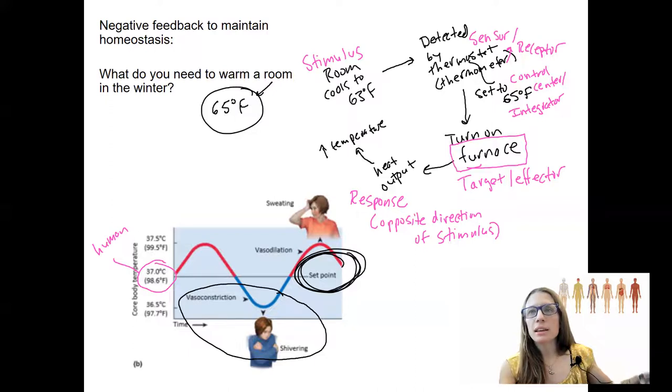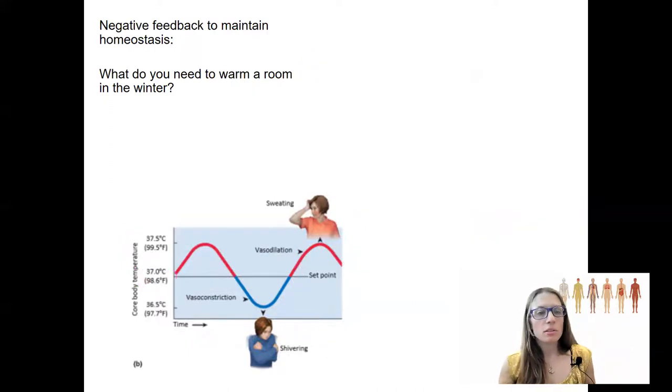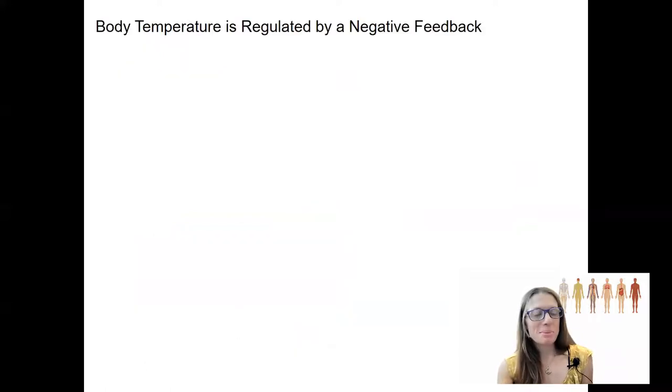So let's draw this out for body temperature. Body temperature is regulated by negative feedback. So we will talk more about what specific receptors there are. And we'll see examples. Again, we're going to apply this all throughout the year. But I want to name some. So there's thermoreceptors all over your skin that detect external temperature. There's also temperature receptors inside your body. So it's basically the thermostat inside your body.